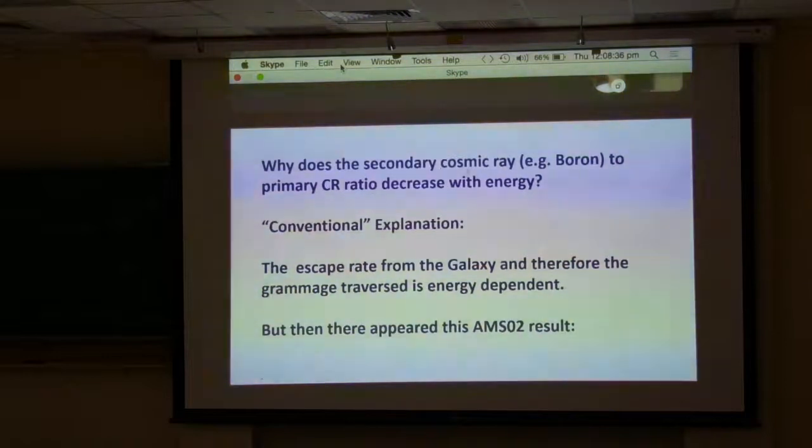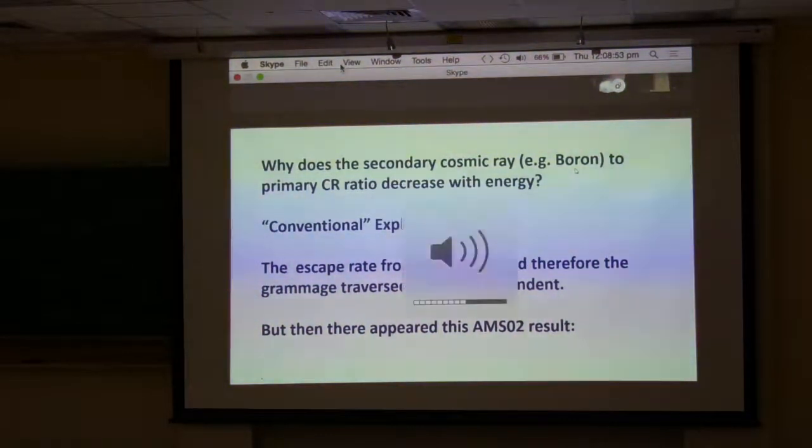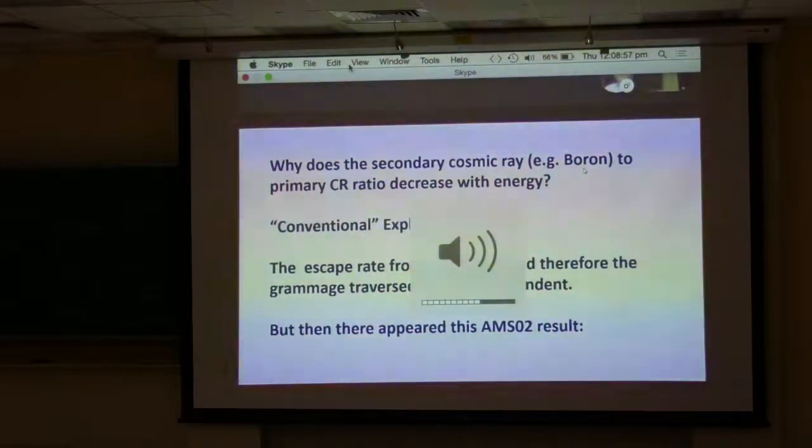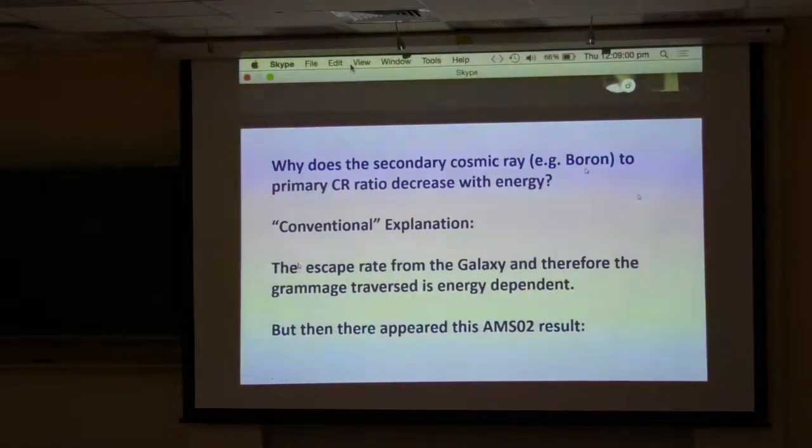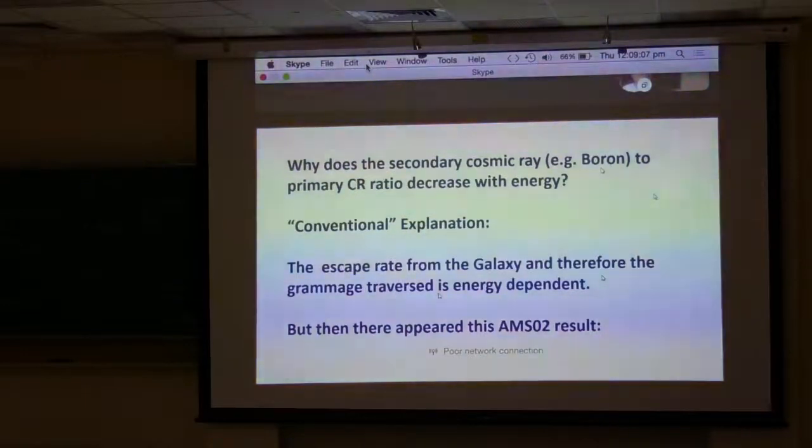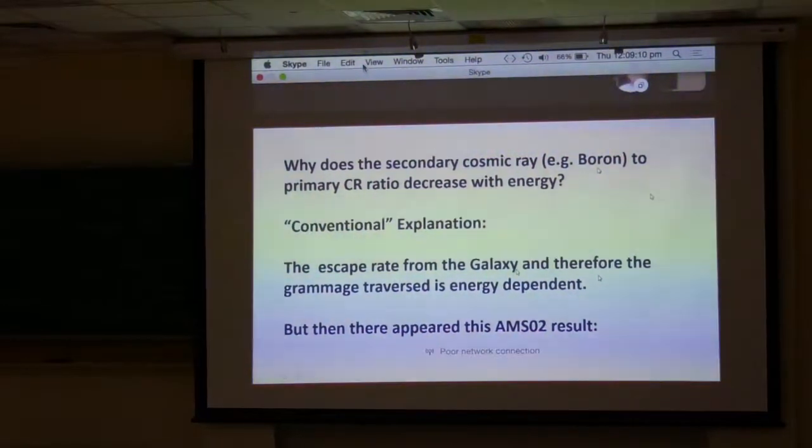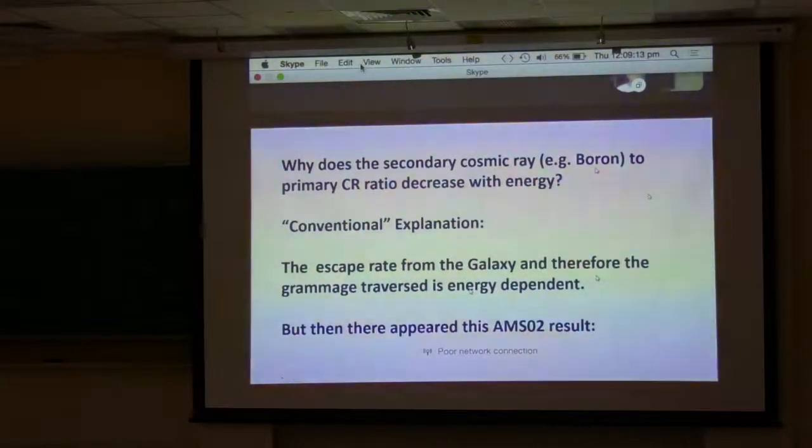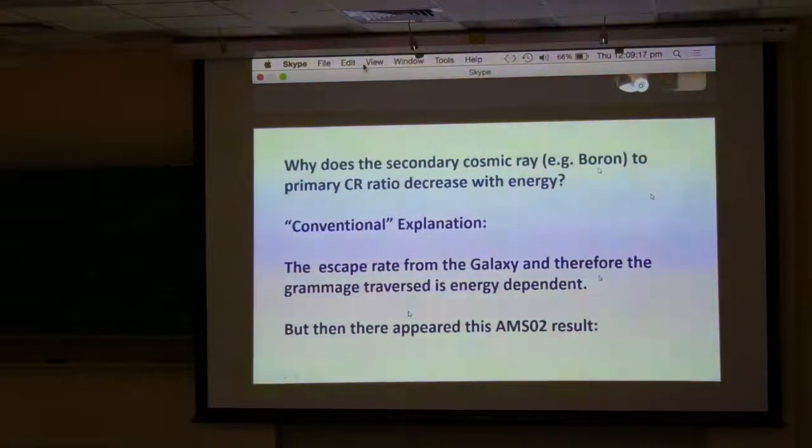The story begins with the well-known observation that the secondary to primary ratio in cosmic rays decreases with energy. For example, the boron to carbon ratio decreases with energy. The boron is made by collisions of carbon nuclei and protons. The conventional explanation is that the escape rate from the galaxy and therefore the grammage traversed by the cosmic ray is energy dependent. So low energy cosmic rays go through more grammage than high energy cosmic rays. And that's always been the explanation.